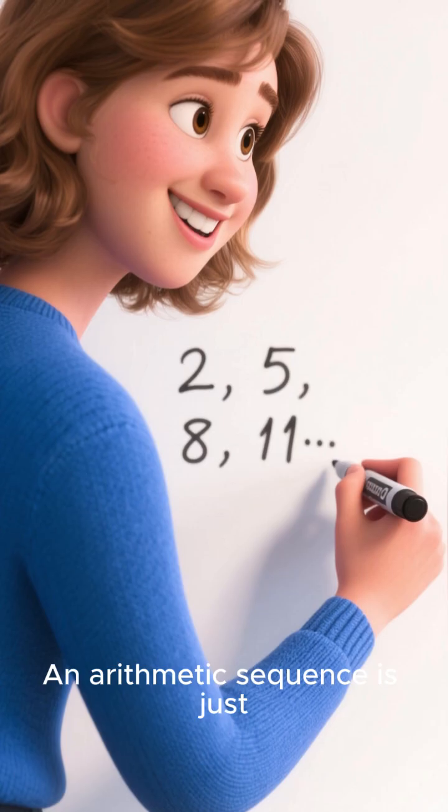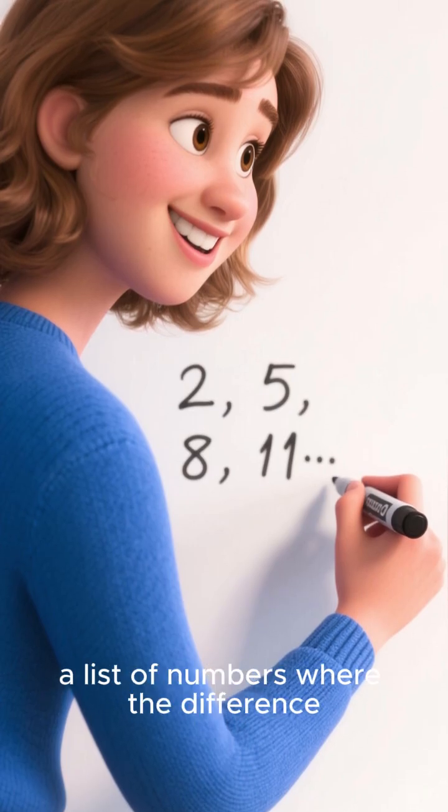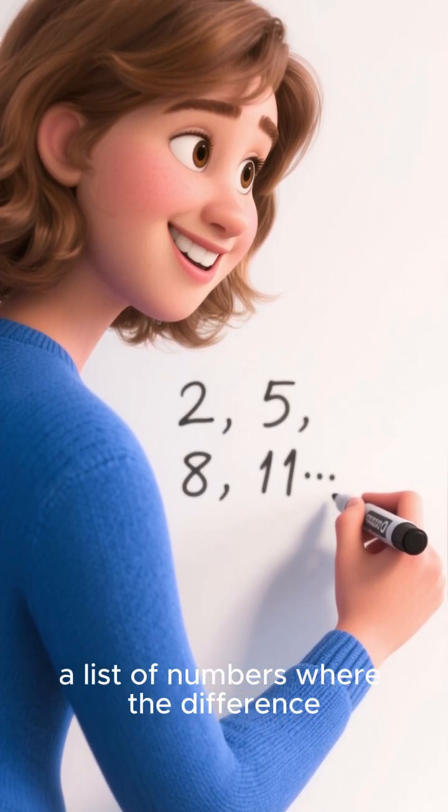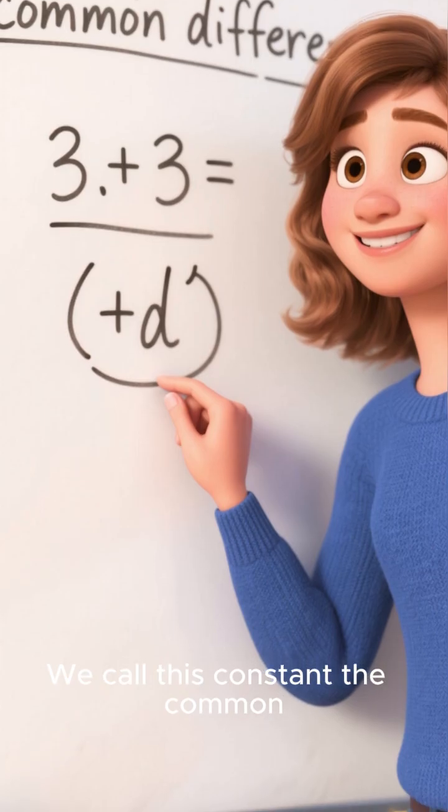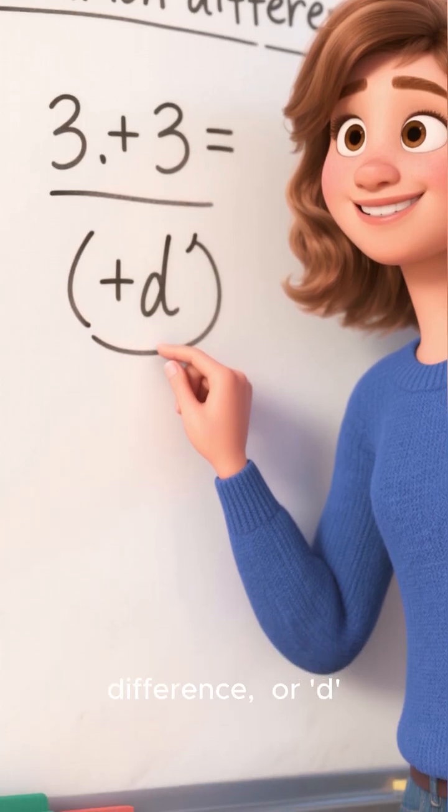Let's break it down. An arithmetic sequence is just a list of numbers where the difference between any two consecutive terms is constant. We call this constant the common difference, or d.